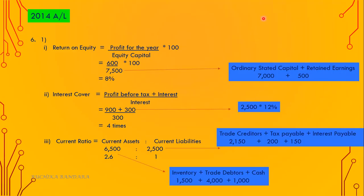In 2014 A-level, this ratio question was given together with the cash flow statement. I'm going to concentrate only on the ratios. Question number 6, first part: return on equity ratio equals profit for the year divided by equity capital, into 100. Profit for the year is 600. Equity capital is ordinary stated capital plus retained earnings — 7,000 plus 500 — altogether 7,500. Into 100, it's 8%.